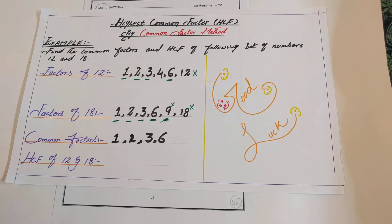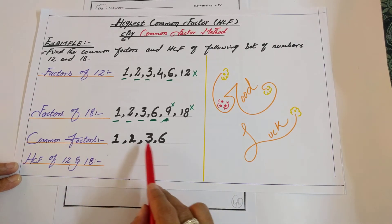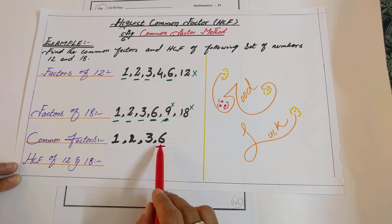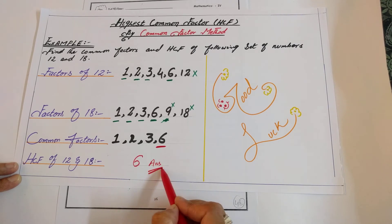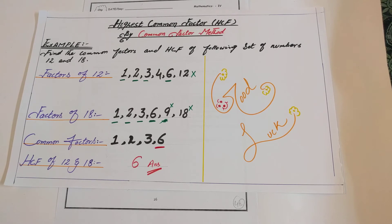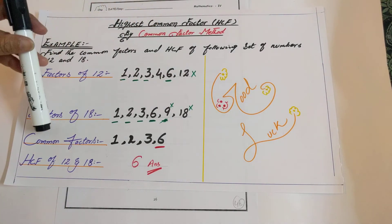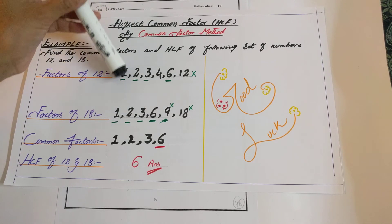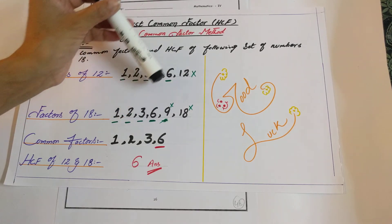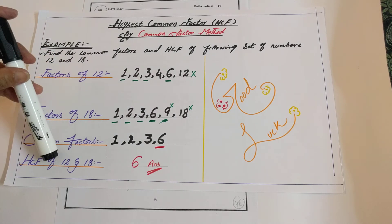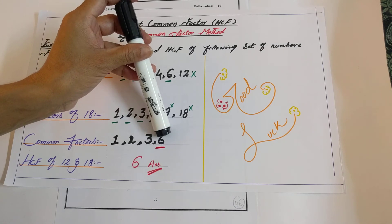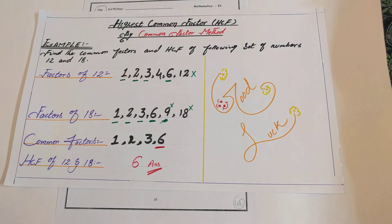Now for the Highest Common Factor of 12 and 18: from the common factors 1, 2, 3, and 6, you choose the highest one. The highest factor is 6. So 6 is the Highest Common Factor of 12 and 18. To summarize: find factors of 12, find factors of 18, identify common factors — 1, 2, 3, and 6 — then choose the highest, which is 6.